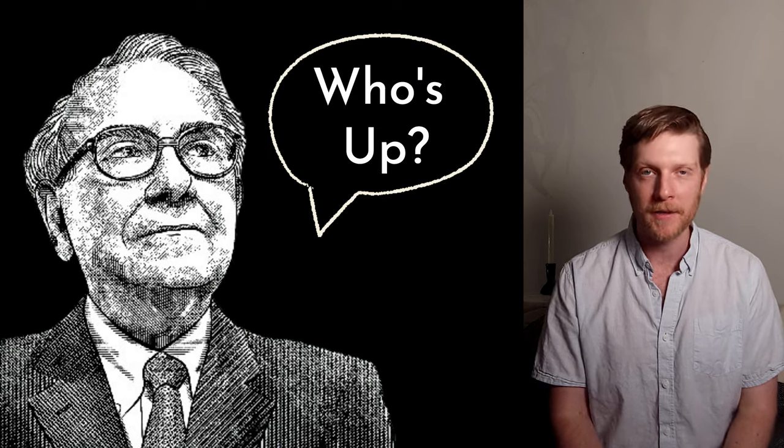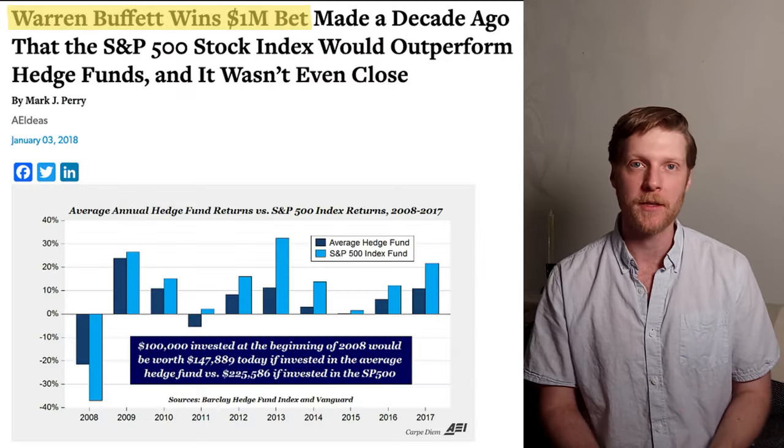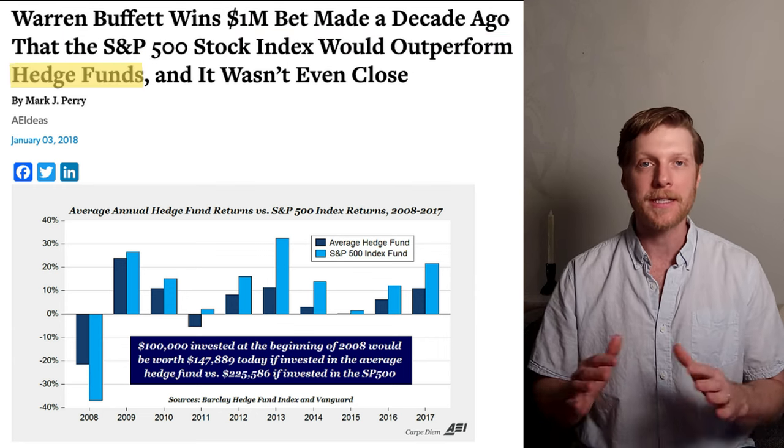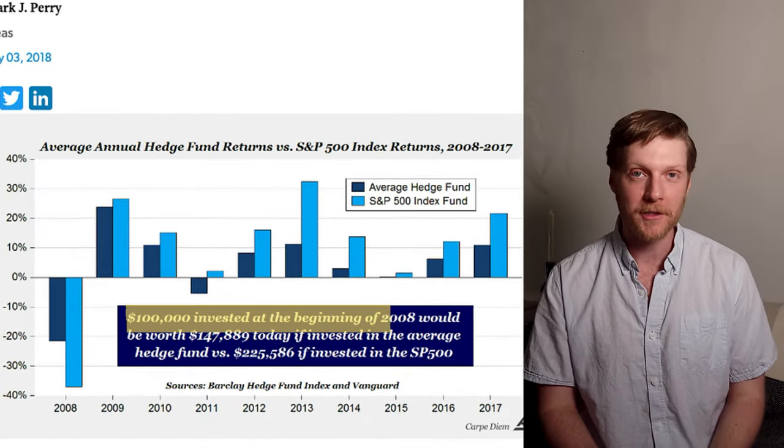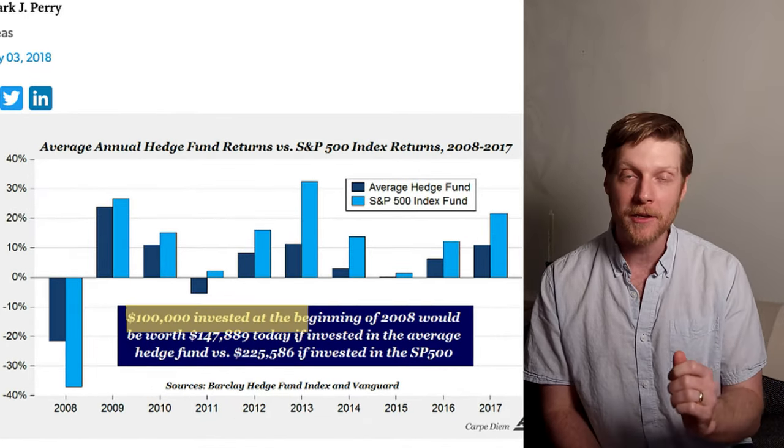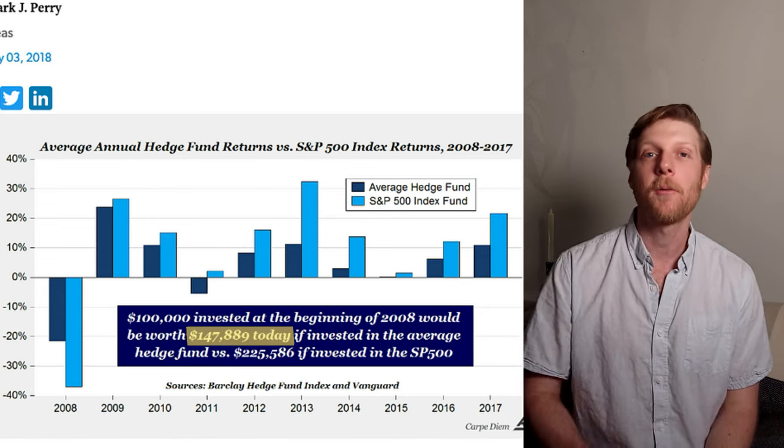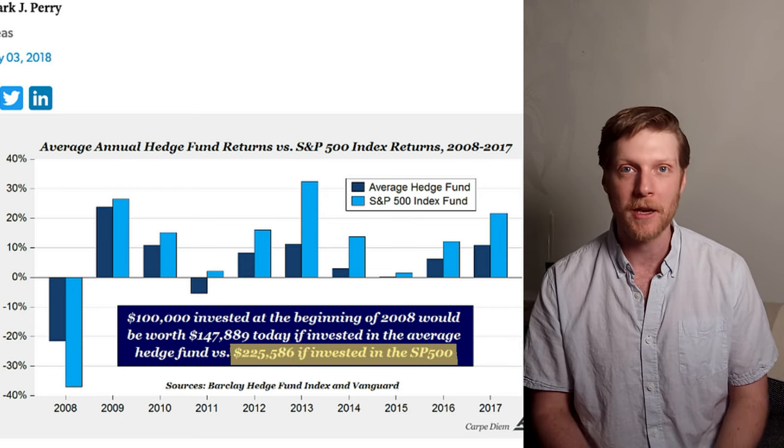Warren Buffett is famous for his $1 million open bet to hedge funds, particularly those with high management fees. His bet was that the S&P 500 would outperform these hedge funds over a 10-year period. Only one hedge fund took him up on his offer, and sure enough, they lost. If you invested $100,000 in the hedge fund starting in 2008, you would come away with a little over $140,000. Whereas if you invested in the S&P 500, you would come away with over $220,000.